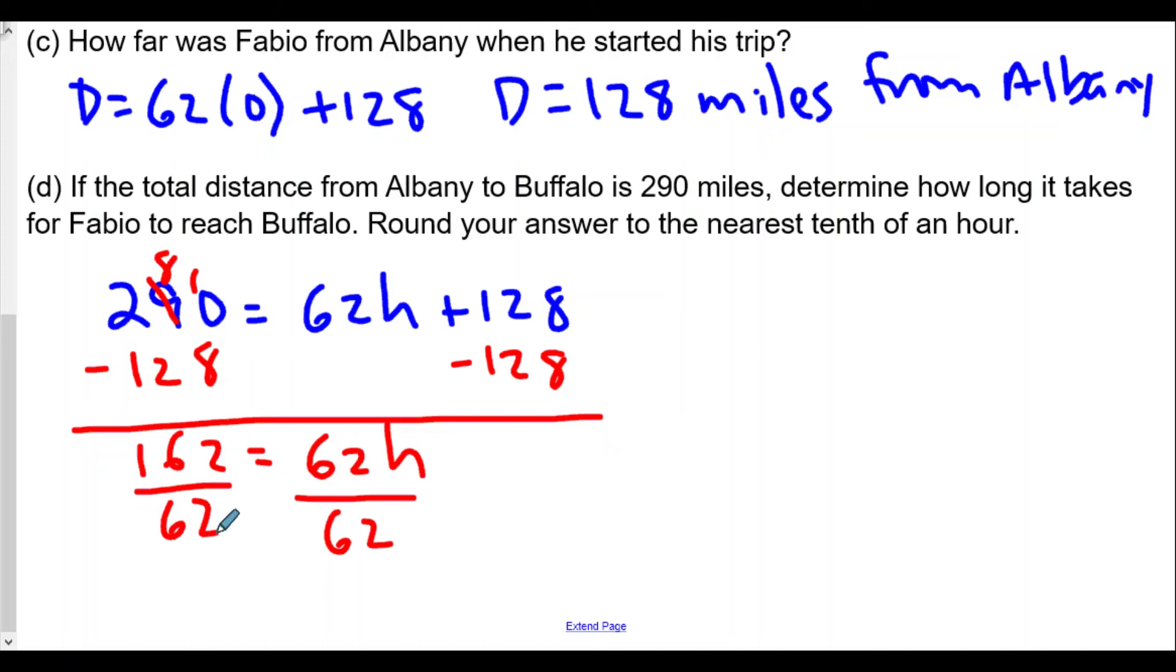So we take 162 divided by 62, and we get in this case 2.6129. So h is approximately 2.6129. To the nearest tenth of an hour, we'll say the amount of time is equal to 2.6 hours.